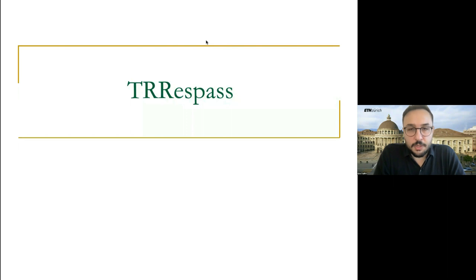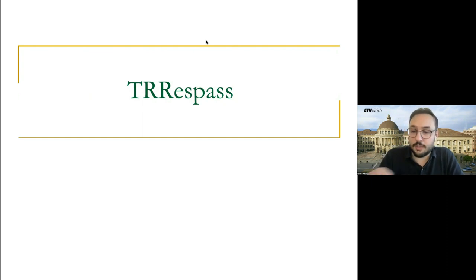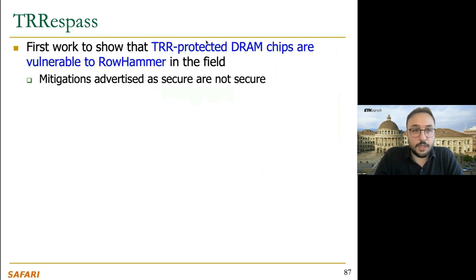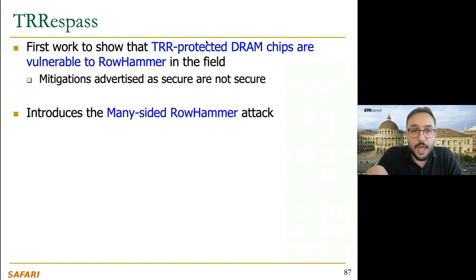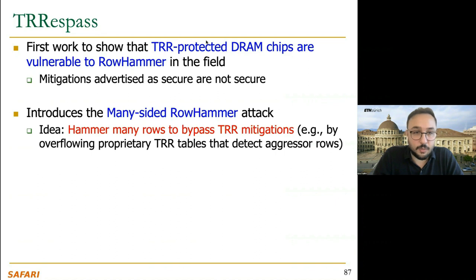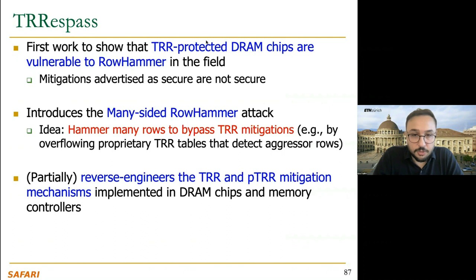After we published the ISCA 2014 paper, some DRAM manufacturers claimed their new chips already have embedded solutions for RowHammer and are no longer vulnerable. To investigate that, we did a study called TRRespass, published at IEEE S&P 2020. TRRespass is the first work to show that target row refresh (TRR) protected DRAM chips, which are not supposed to be vulnerable, actually are vulnerable. TRRespass introduces the many-sided RowHammer attack, a new attack type that hammers many rows to bypass implemented mitigation mechanisms.